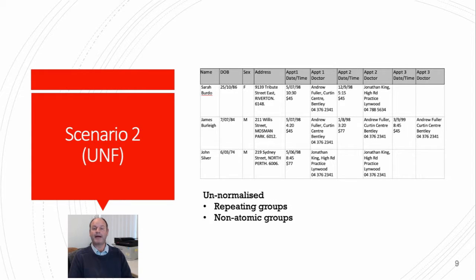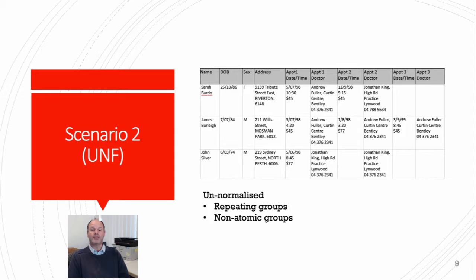Here is our second example about medical centers, the patients who go there, and the doctors who work in them. You will notice some problems with this table. We have repeating groups such as appointment date, time and appointment doctor attributes. We also have several cells which are non-atomic, having several values in one cell — for example, under the appointment date/time attribute: date, time and price values. And in the appointment doctor attribute: the doctor name, medical center, suburb and phone number. Currently this table is unnormalized.